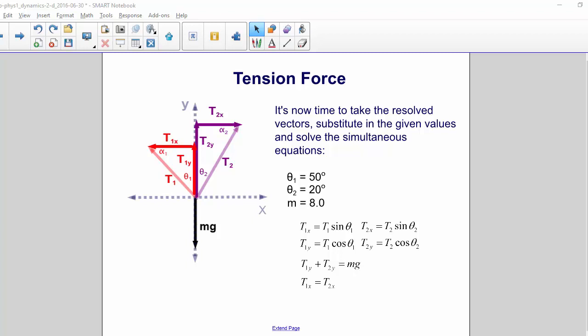T1y plus T2y equals Mg, and T1x equals T2x.